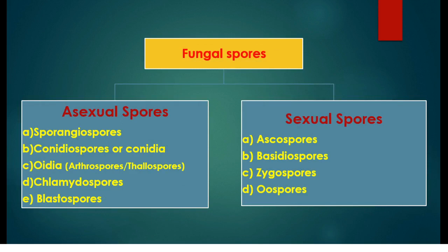Fungal spores: asexual spores of fungus include sporangiospores, conidia, oidia (otherwise known as arthrospores or thallospores), chlamydospores and blastospores. Sexual spores include ascospores, basidiospores, zygospores and oospores.